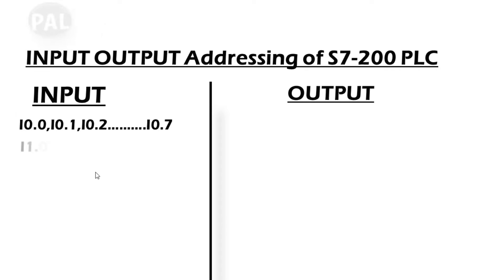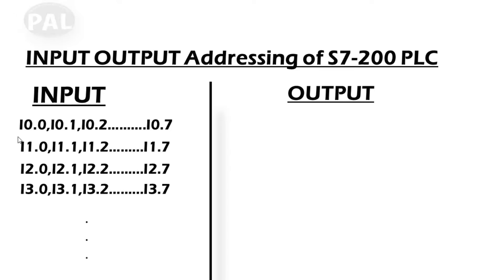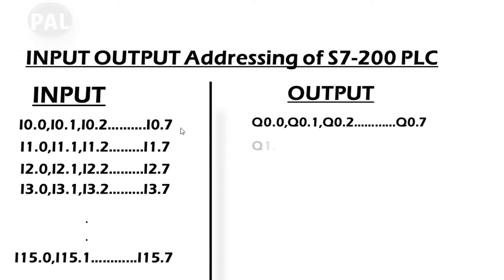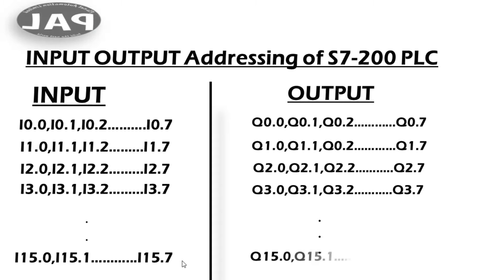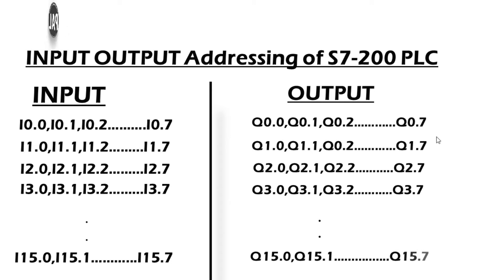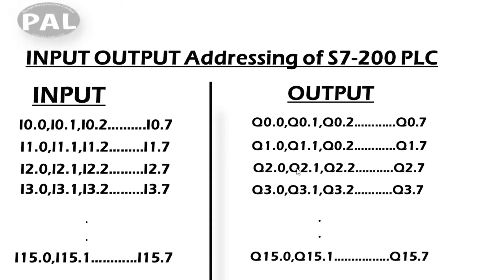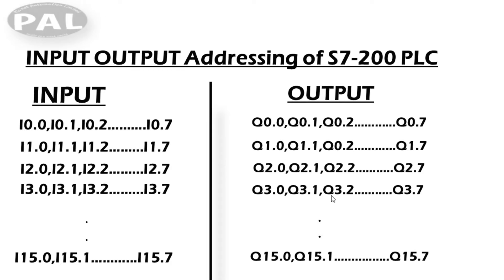Input and output addressing of the S7-200 PLC: the input range is I0.0 to I0.7 — this is the octal format. It goes all the way to I15.0 to I15.7. Output is similar but uses Q: Q0.0 to Q0.7, and up to Q15.0 to Q15.7. I is your input function and Q is your output function — this is the input and output addressing system.